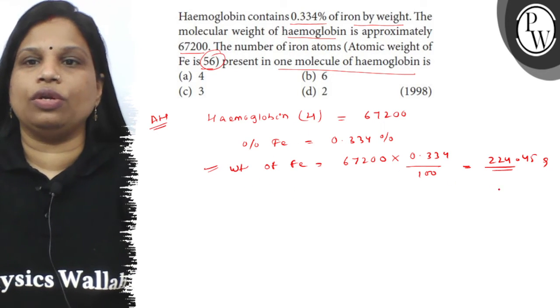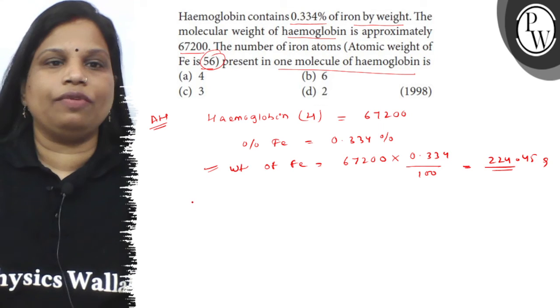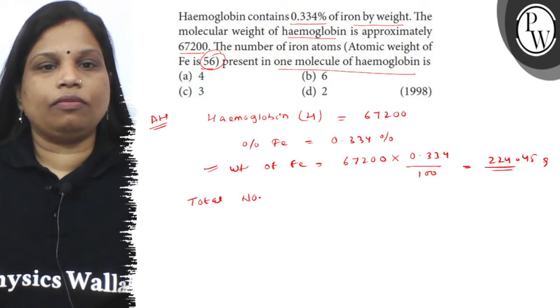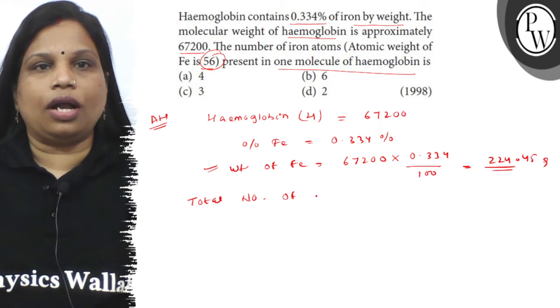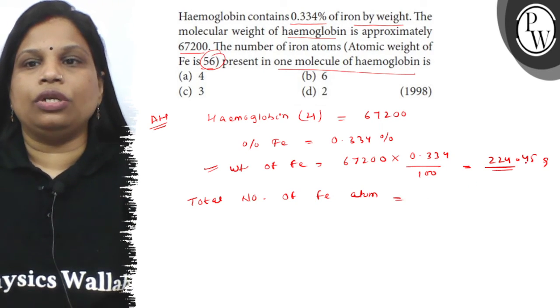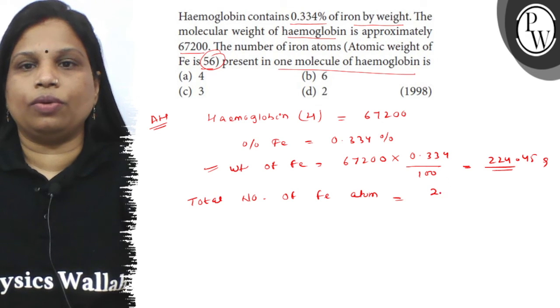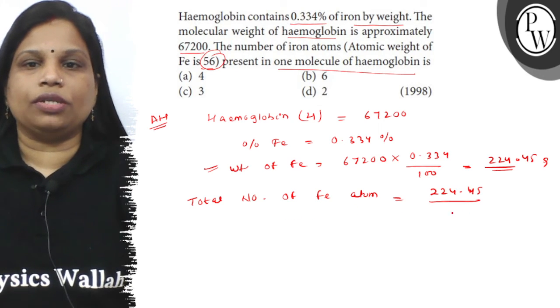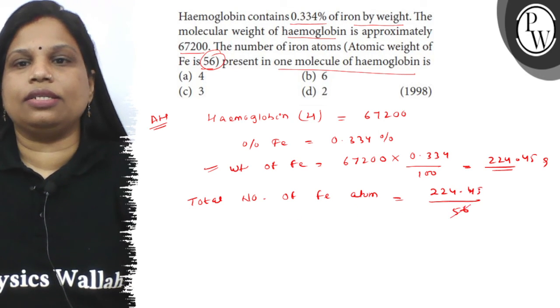Now as the atomic weight of iron is 56 and the total weight of iron present in the molecule is 224.45, so total number of iron atoms is equal to the total mass of the iron, 224.45, divided by the atomic mass of iron, that is 56.